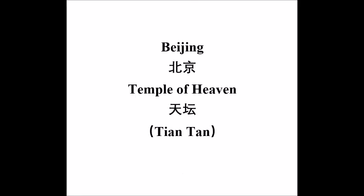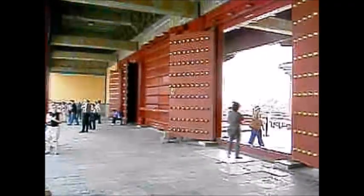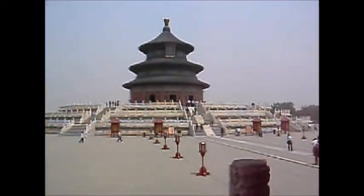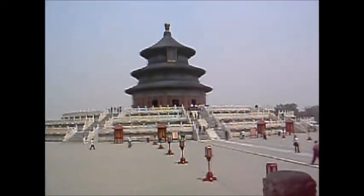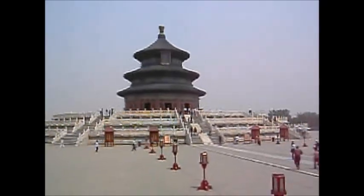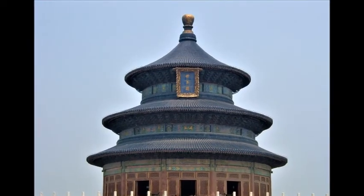The Temple of Heaven, or Tian Tan, is a ceremonial site in ancient China, and was the place where the emperor would offer gifts and sacrifices to the gods for a bountiful harvest in the coming year.